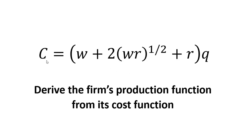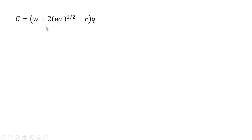Hello. In this video, we're going to take this firm's cost equation and use it to derive the firm's production function. Here is the firm's cost equation. W is the price of labor, R is the rental rate of capital — the price of capital — and Q is the quantity of output.